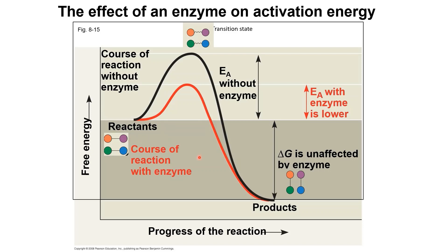When the reactants absorb heat — which is the activation energy that initiates a chemical reaction — the molecules of the reactants will collide more often. The collision causes the bonds between the molecules to be more likely broken, so the reactants will then reach the transition state. The transition state has more free energy compared to the free energy of the reactants and products.